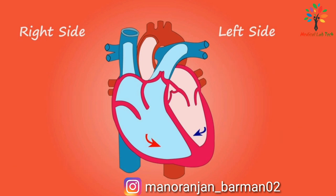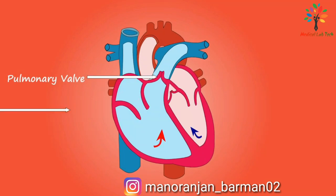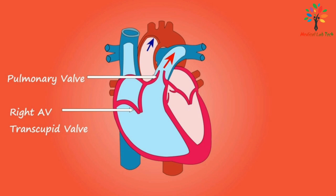Now let's talk about the valves of the heart. The pulmonary valve is present at the opening of the pulmonary artery; this valve prevents the backflow of blood into the right ventricle when the ventricular muscle relaxes. The tricuspid valve separates the right side of the heart into the right atrium above and the right ventricle below.